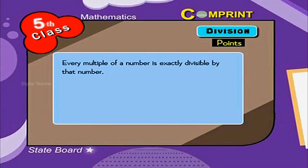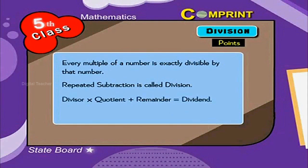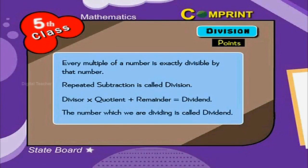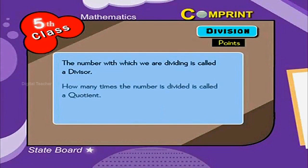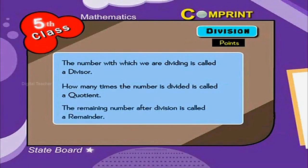Repeated subtraction is called division. Divisor into quotient plus remainder is equal to dividend. The number which we are dividing is called dividend. The number with which we are dividing is called a divisor. How many times the number is divided is called a quotient. The remaining number after division is called remainder.